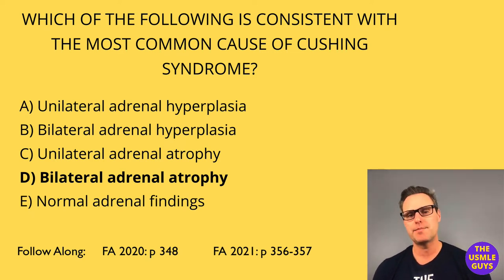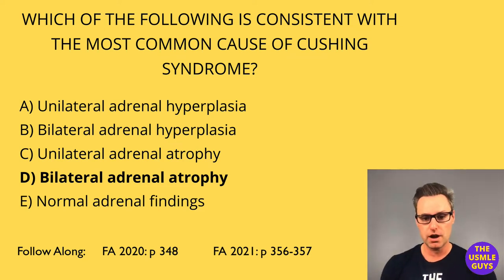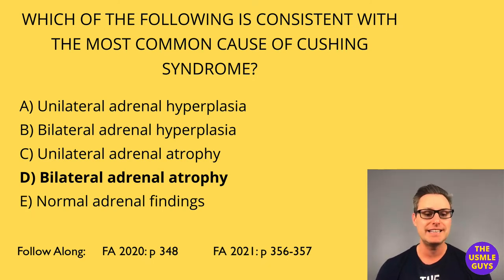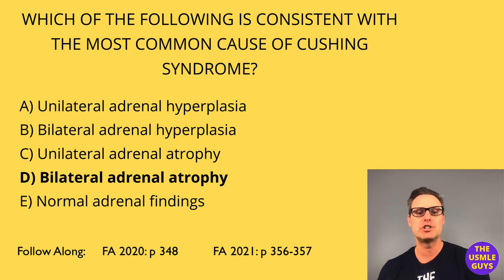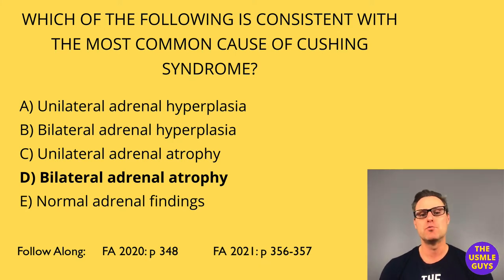Before we move on, let's look at Nelson syndrome, which occurs following bilateral removal of the adrenals for refractory Cushing disease. This results in enlargement of a pre-existing ACTH-secreting pituitary adenoma that increases ACTH, leading to hyperpigmentation. It causes compression of adjacent structures, headache, and bitemporal hemianopia. This is managed simply by removal of that tumor.